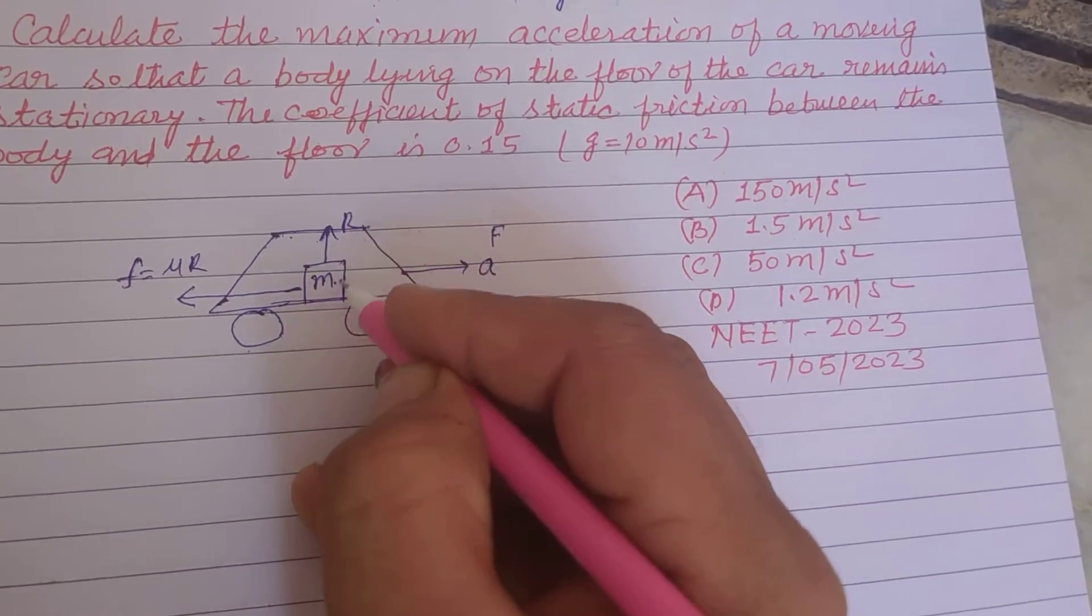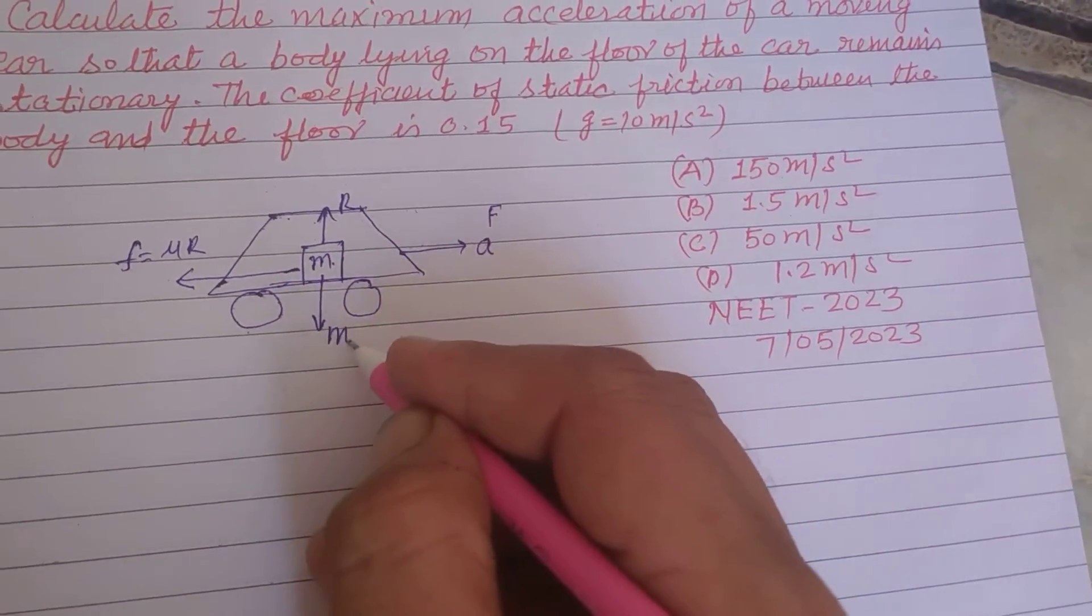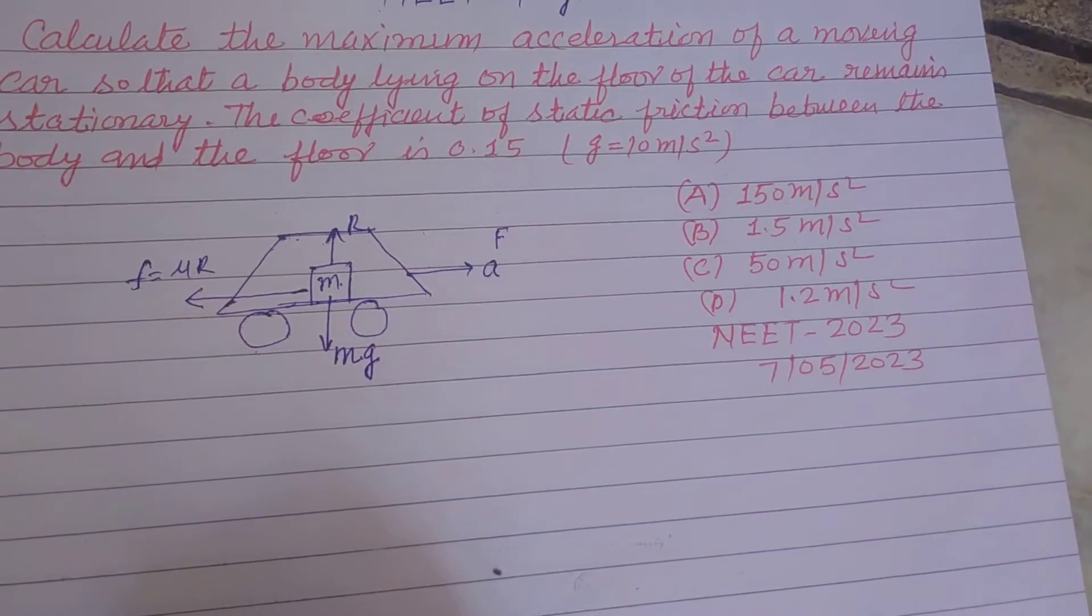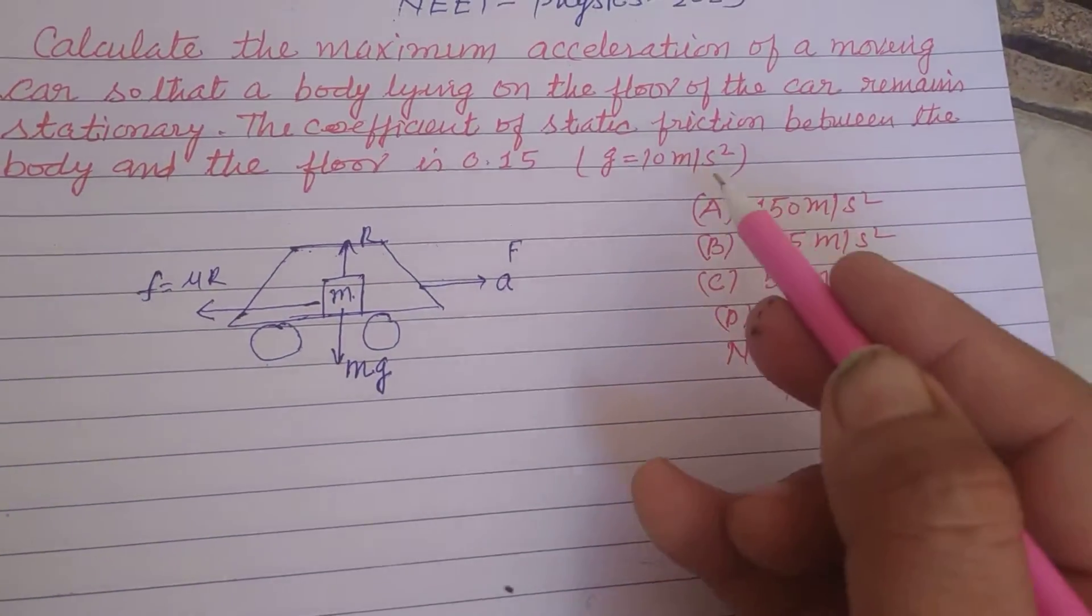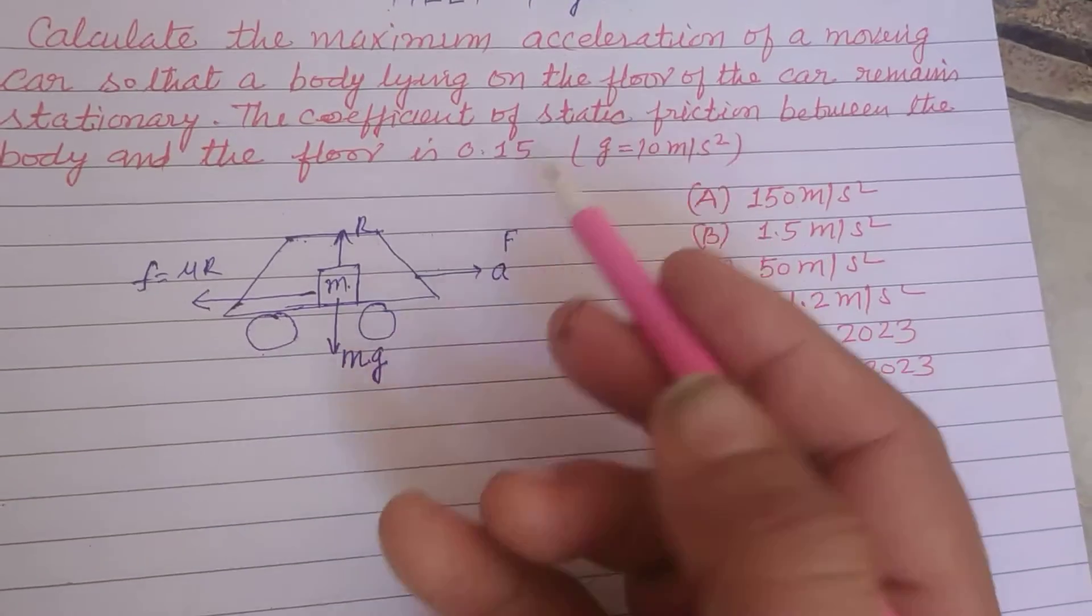R is the reaction of the floor and mg is the weight of the body. The body remains stationary.